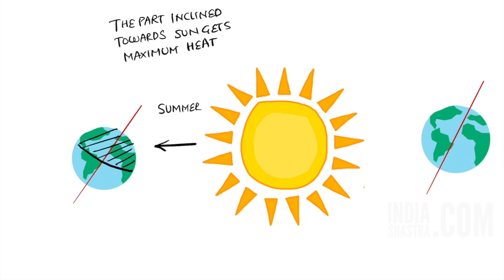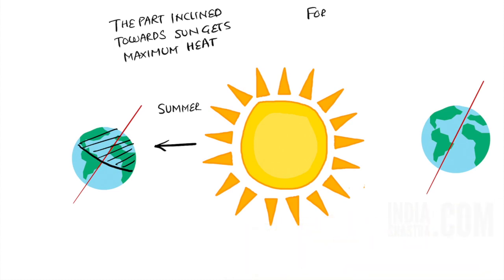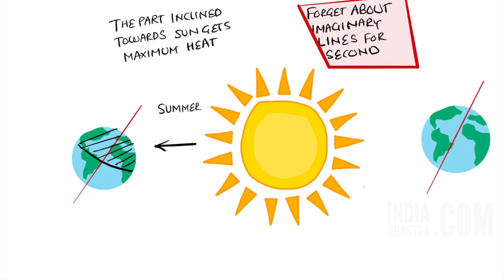If there is confusion, it is all because of one fact. All the lines that we have drawn on the globe are imaginary lines. Forget about these imaginary lines for a second. Just remember the fact that Earth is tilted around its axis. The part which is inclined towards Sun will get maximum heat and there will be a summer season.